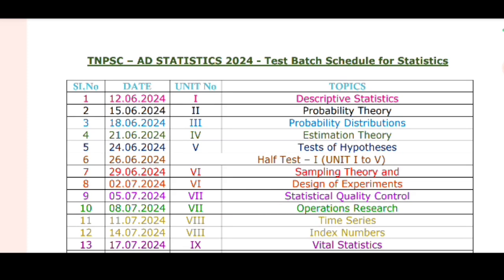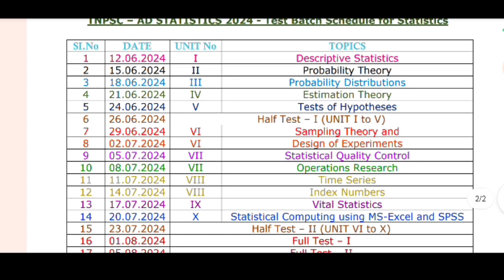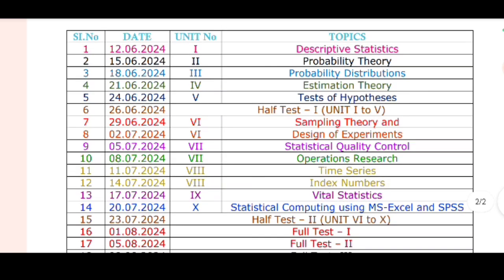Unit No. 1 on June 12th: Descriptive Statistics. June 15, Unit No. 2: Probability Theory. June 18, Unit No. 3: Probability Distribution. Unit No. 4, June 21: Estimation. Unit No. 5, June 24: Testing of Hypothesis.